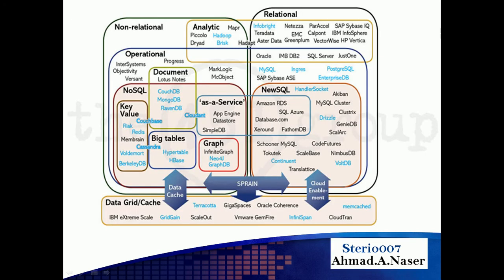We have graph stores like Neo4j. This diagram shows the database landscape — non-relational and relational — and a NoSQL-generation of SQL databases like Amazon RDS, SQL Azure, Database.com, and others. These are called the NewSQL databases.